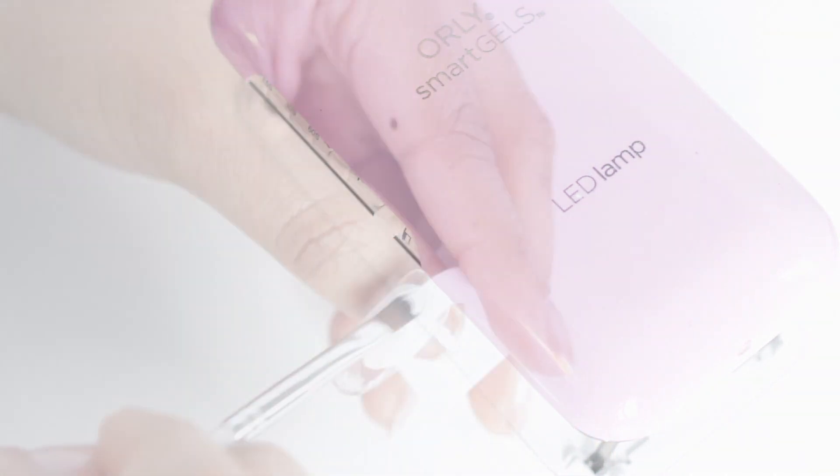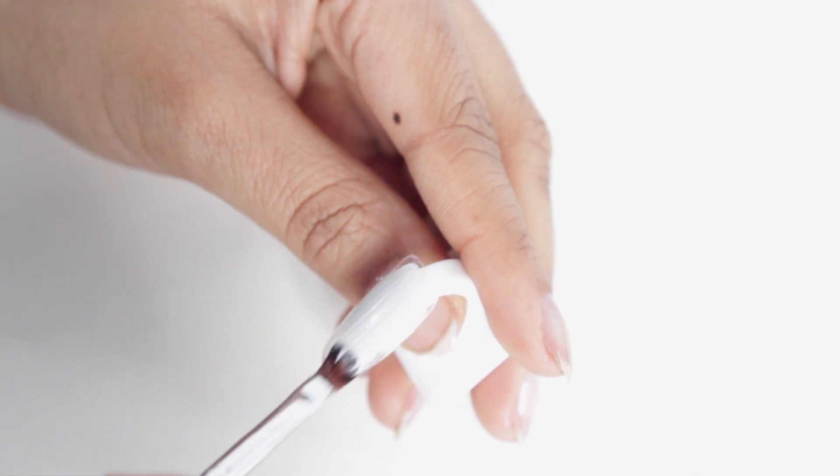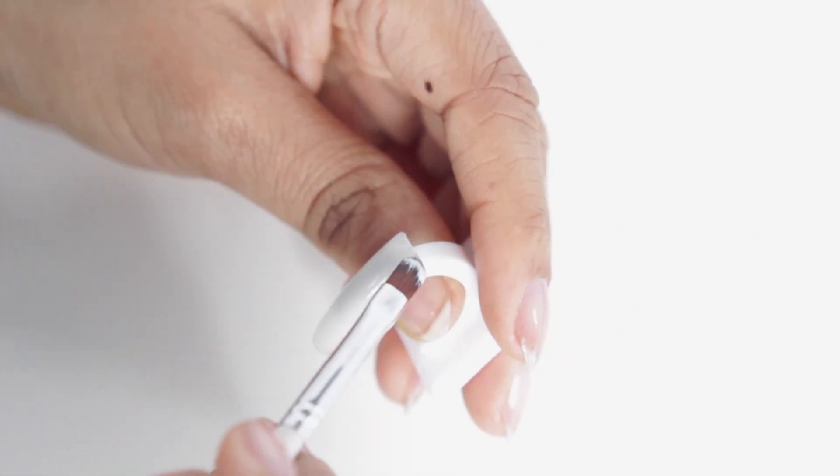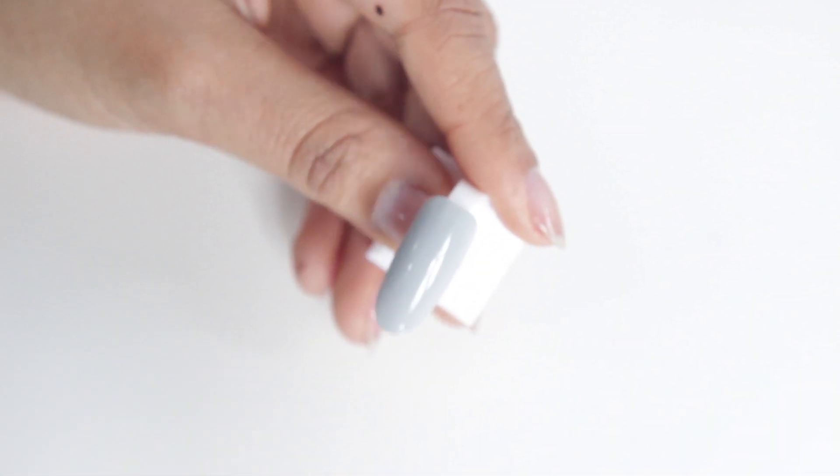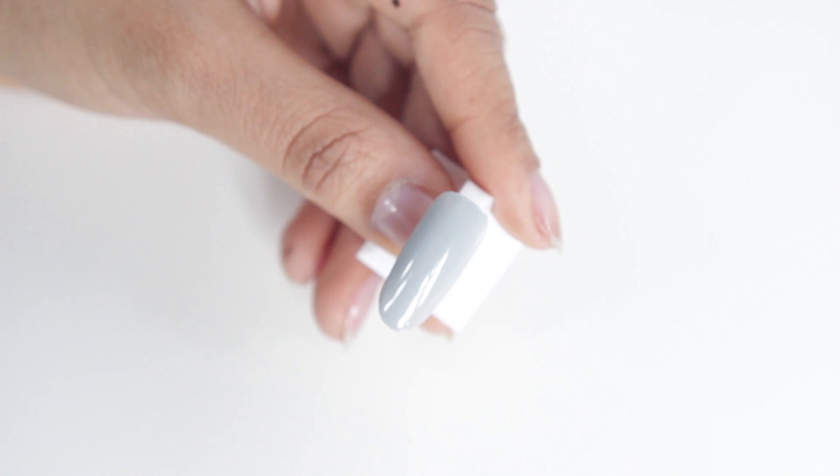Then we're going to apply our base color. I'm using a heather gray. And then I'm also going to apply a second coat. I decided to actually go darker, so that's why there's such a jump there. Don't judge me.